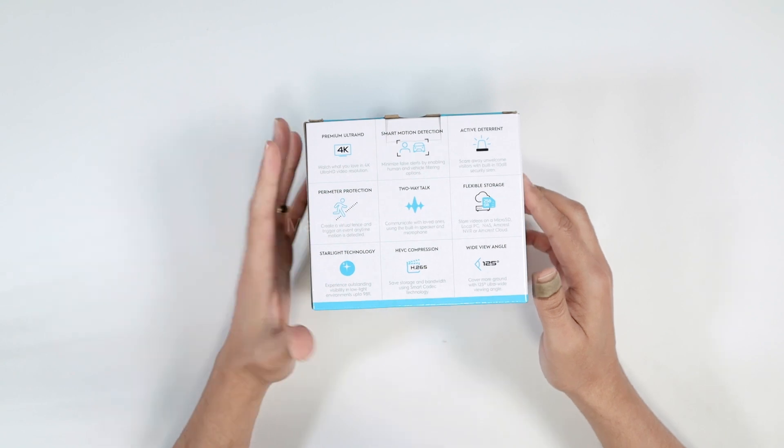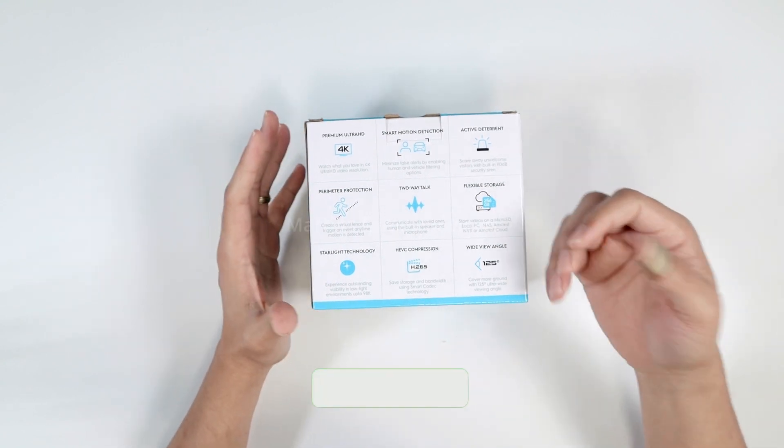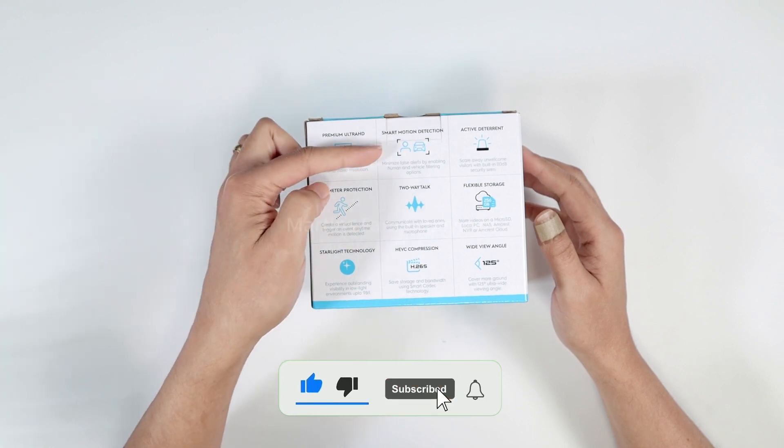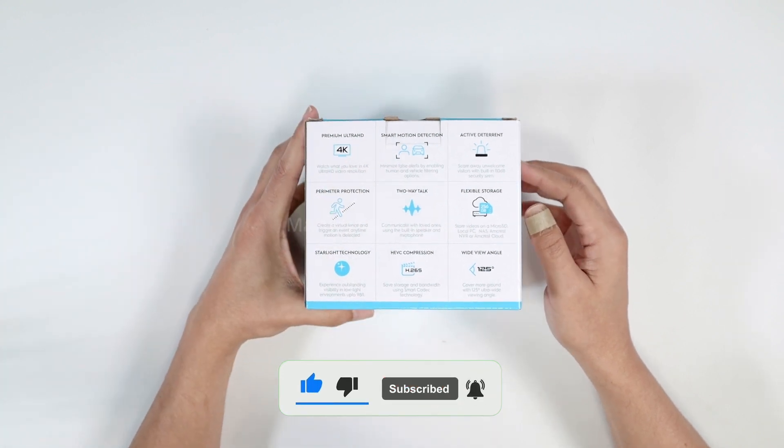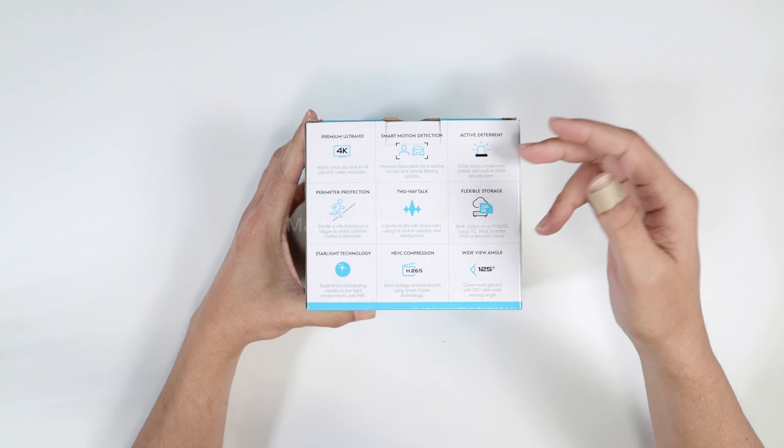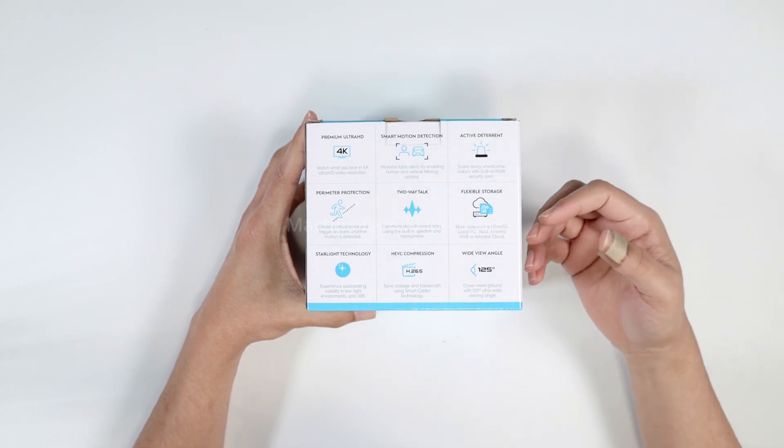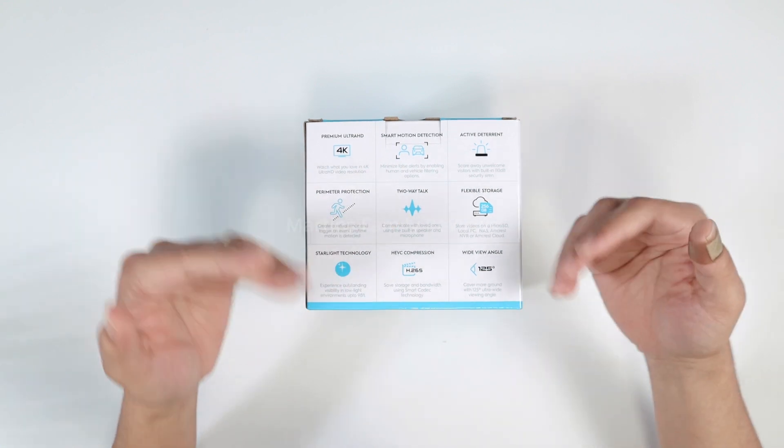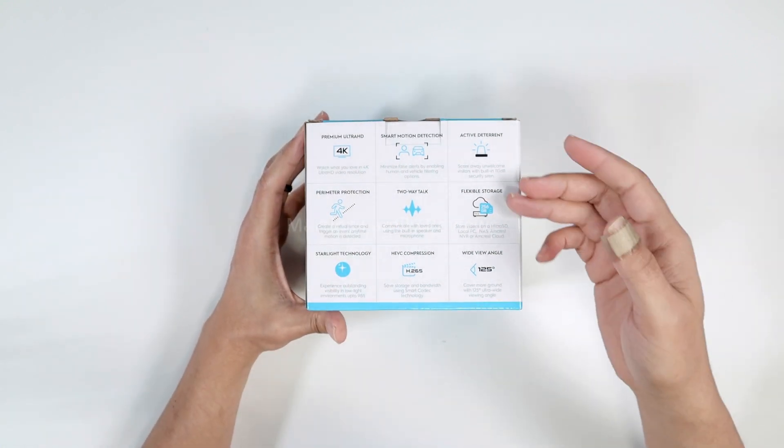And let me see how other features, how many features the camera has here. 4K, already talked about. High resolution, smart motion detection, and active deterrent, so you can scare people that are coming close to the camera. And perimeter protection, two-way talk, so you can talk to people close to the camera. Pretty good. Flexible storage.